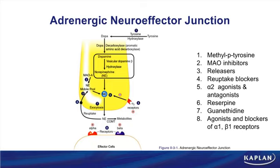Notice the box drawn around this reaction — the conversion of dopamine to norepinephrine takes place inside storage vesicles. It's a vesicular enzyme converting dopamine into norepinephrine.